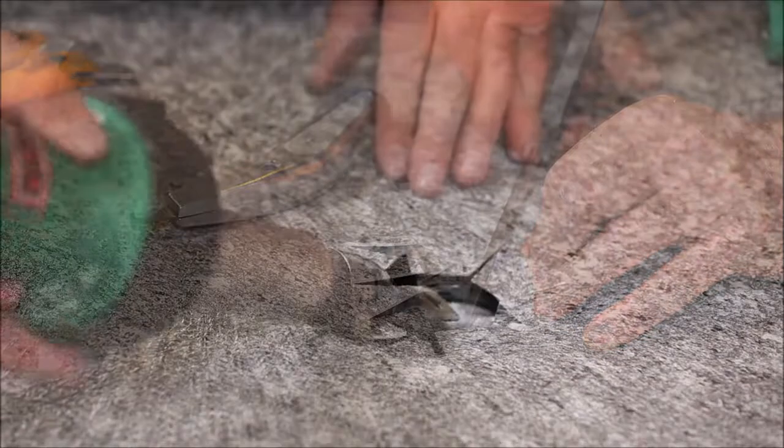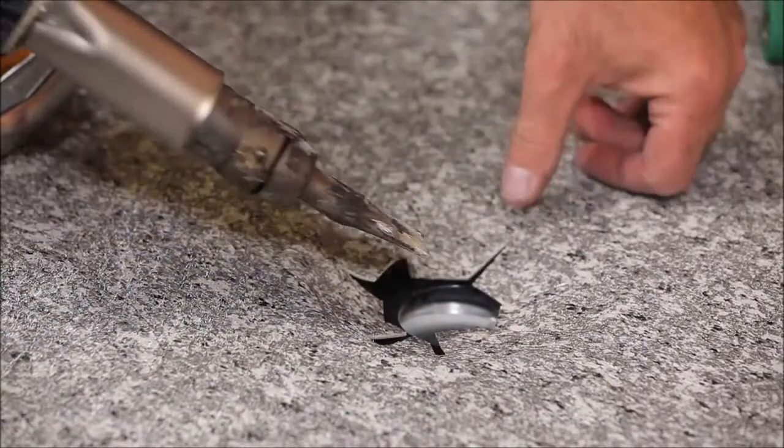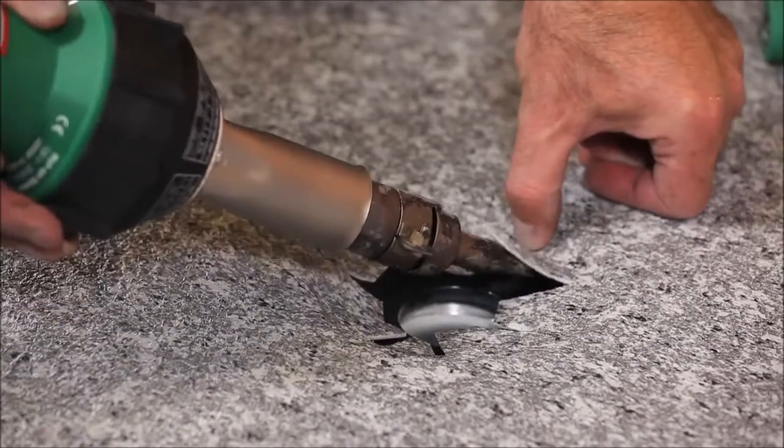Place the welder between the vinyl and the drain, welding the membrane to the flange thoroughly before welding down the triangles into the drain inlet.